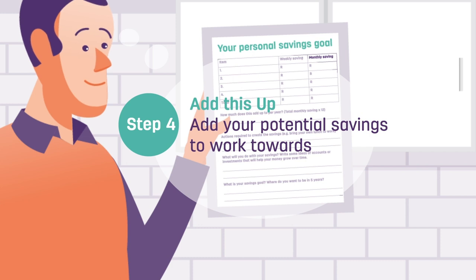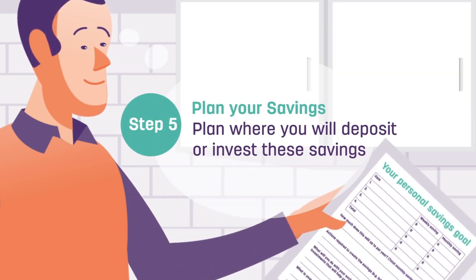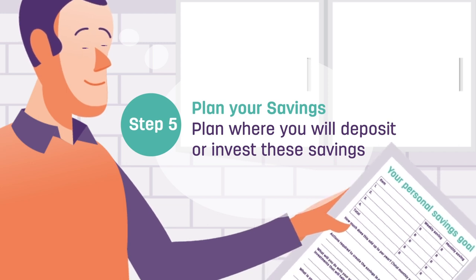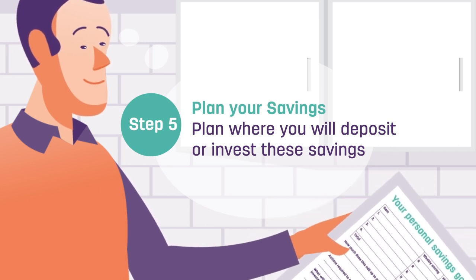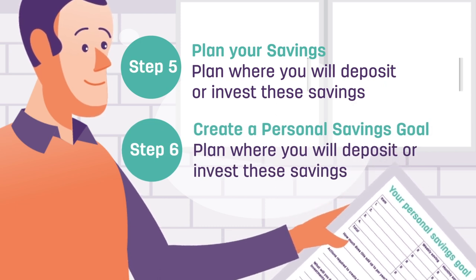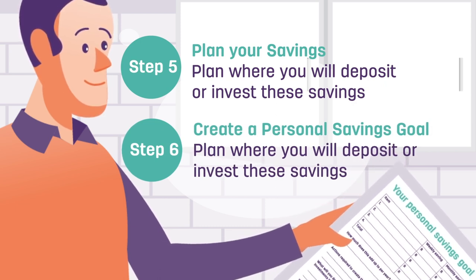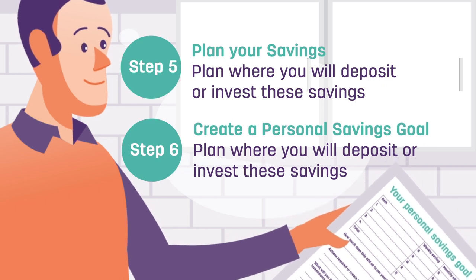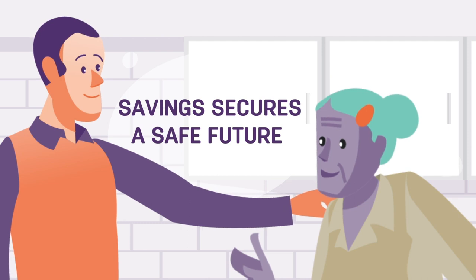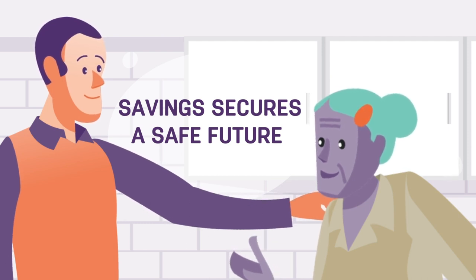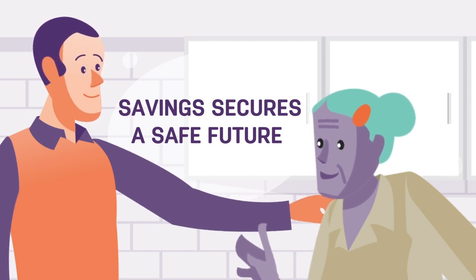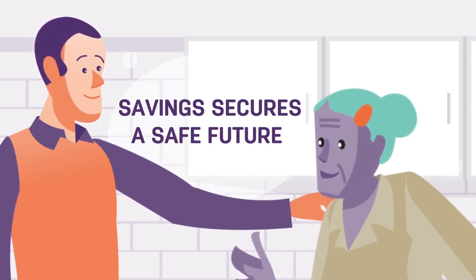Next, add your potential savings together — this will give you a goal to work towards. Now you can look at different accounts or investments that will help your savings grow over time. Finally, create a personal savings goal by asking yourself: where do I want to be in five years? Use this to keep you focused. That's it for our spotlight on savings. Financial literacy is power — the power to secure the future that you deserve, with Streetwise Finance by Hollard.